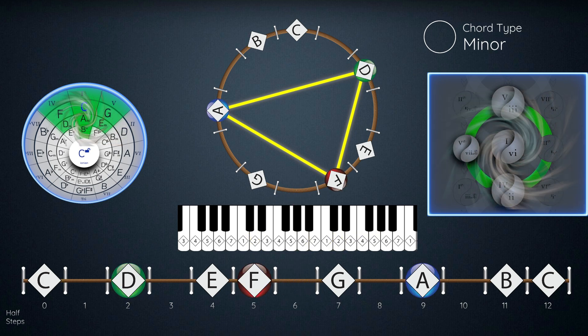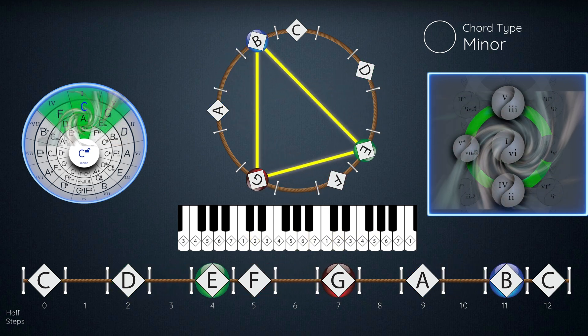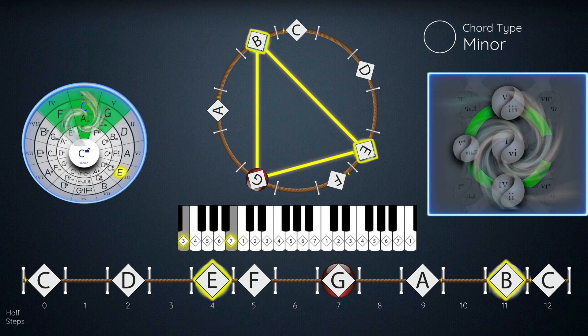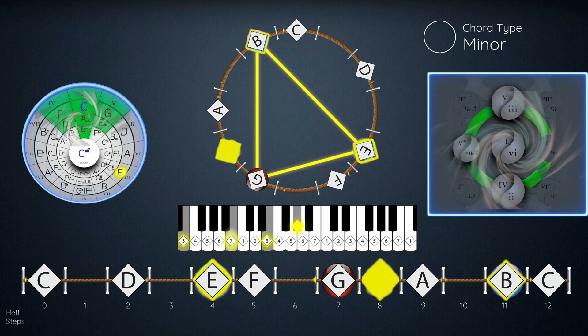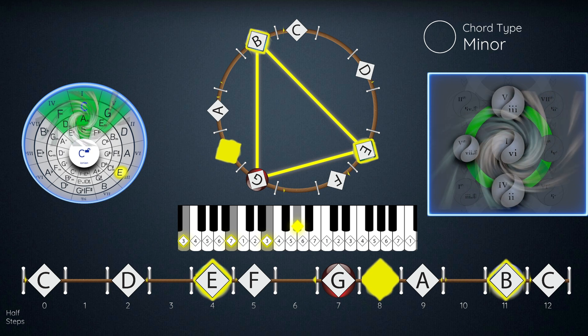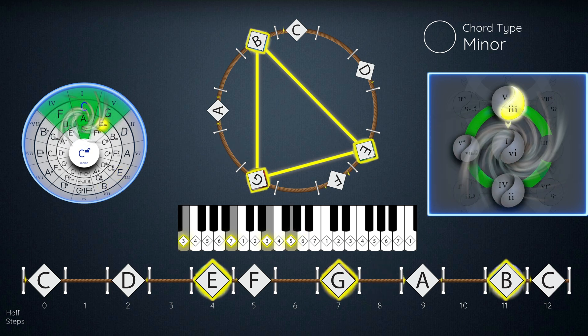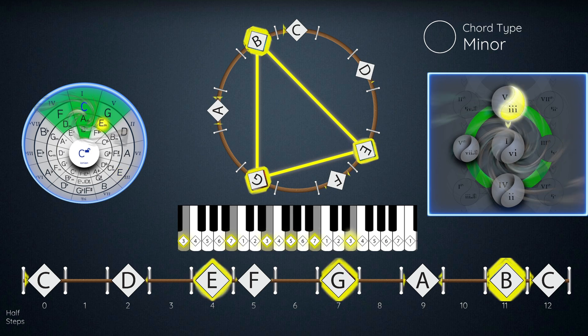Same thing if I rotate it to E. I can't play E major because that G sharp is not part of the scale. It has to be a G natural, which makes it a minor chord.